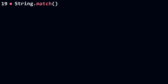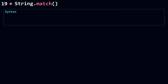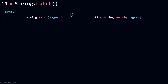Let's talk about `match`. It's almost like the `search` method — they both take a regular expression and match a string against it. The difference is that `match` returns an array with information about the match, while `search` returns the index of the first match. When `match` fails it returns null, and when `search` fails it returns minus one.